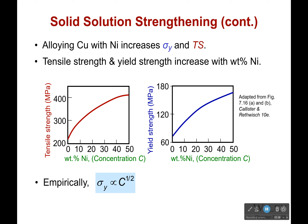If we mix together copper and nickel, what we see is that as the weight percent of nickel increases, we have an increase in yield strength and an increase in tensile strength. Empirically, it's actually proportional to the concentration to the one half. As we continue to increase the amount of nickel, it increases that tensile strength up to a maximum, and then eventually it's going to start going down, probably to the tensile strength of nickel as we approach 100%.